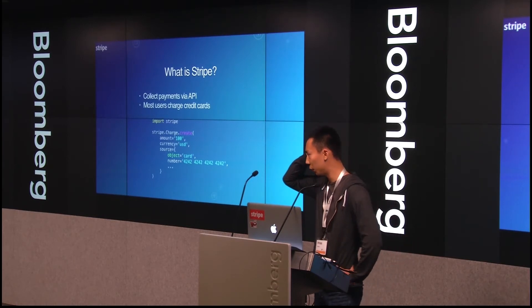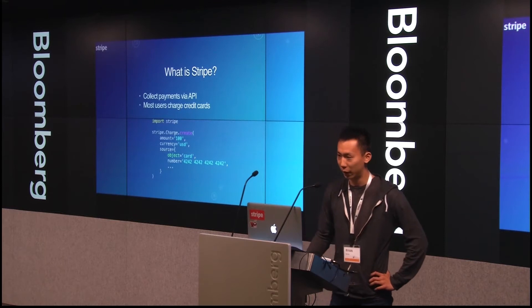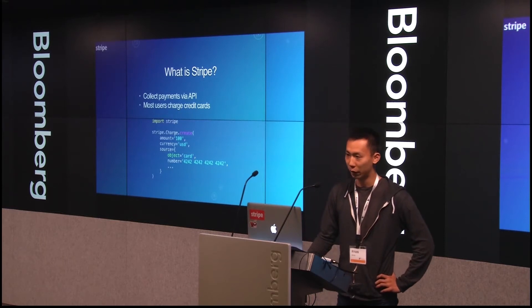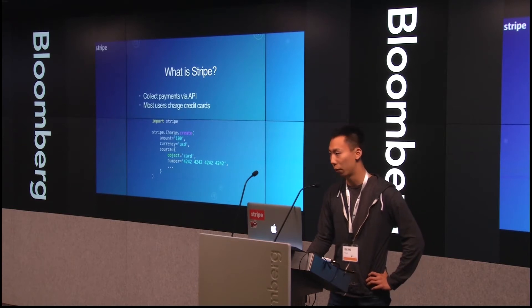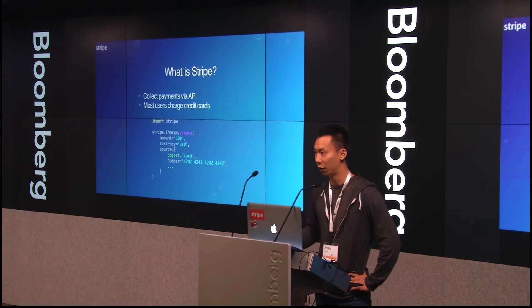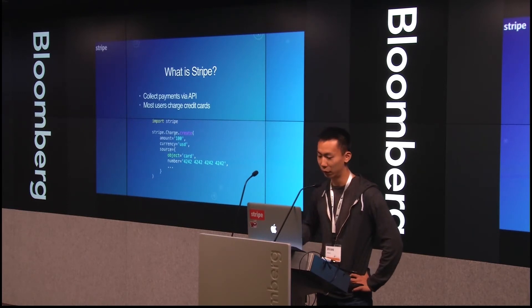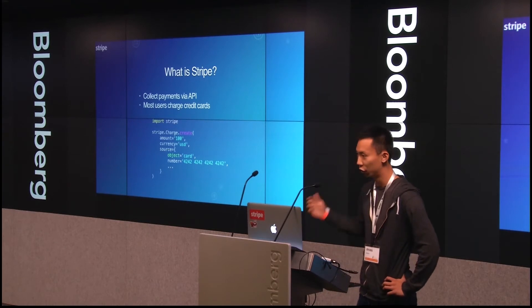For those of you that don't know what Stripe is, we provide an API for collecting payments. If you have a web app or a mobile app, you would send a request to our API — charge this credit card this amount. It's basically as simple as, from the Python bindings, stripe.charge.create.